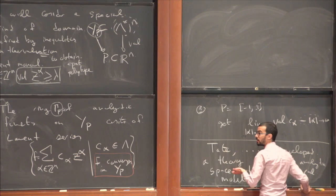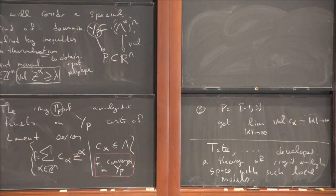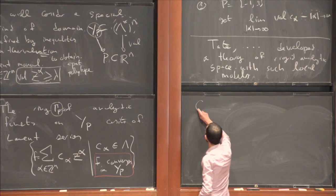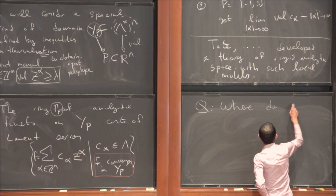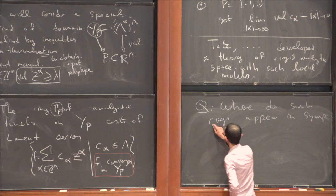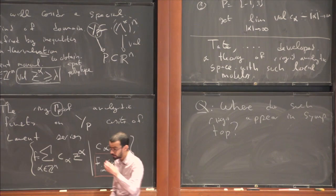If the only thing you know is that mirror symmetry should tell you you have a rigid analytic space, then you have some idea that this is a framework you should use. But still it's confusing — there is a puzzle of where such rings appear in symplectic topology. I claim that there is a natural place for such rings, which I will explain now.